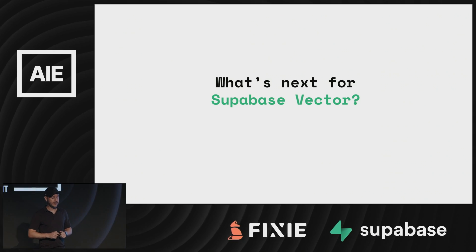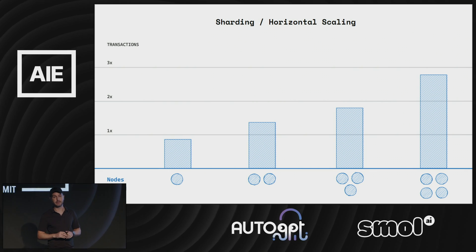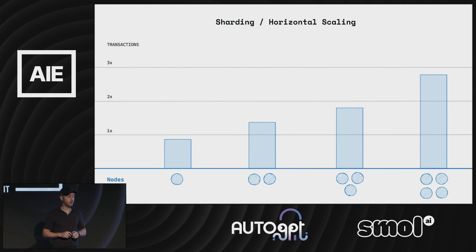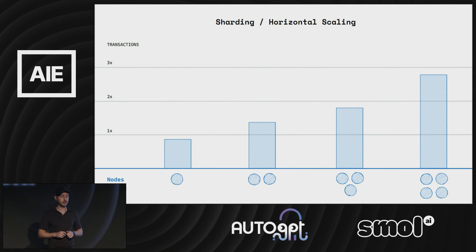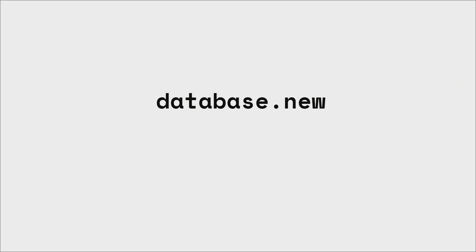What's next for Superbase vector? We've been focused on enterprise use cases — how do you store billions of vectors? We've been working on sharding with Citus, another Postgres extension, which lets you split your data between different nodes. We've found that transactions scale in a linear fashion as you add nodes. We've been chatting with the Citus team at Microsoft — if you want to be a design partner on this, especially if you're already storing billions of embeddings, we'd love to work with you. To get started, go to database.new. Our swag has also finally arrived, so come see us at the booth for free credits and swag — happy building.